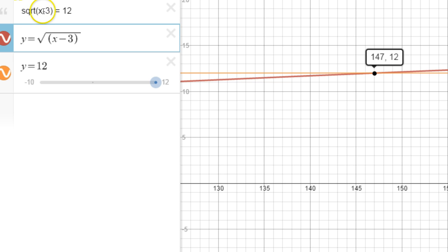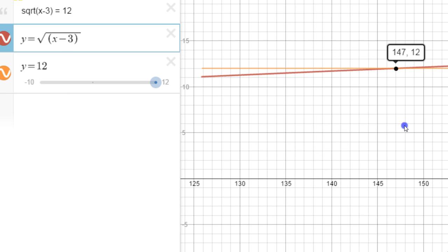Because if you think about it, what number minus 3 and then you square root it gets you 12? That has to be 147 minus 3. So that one's as simple as that.